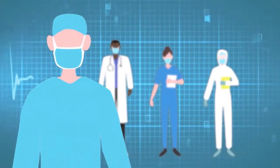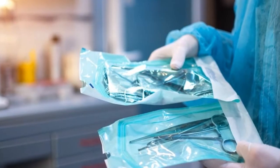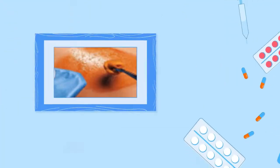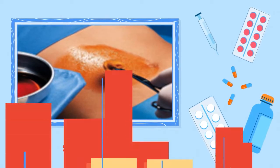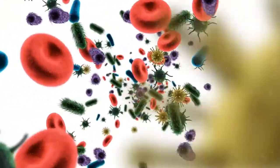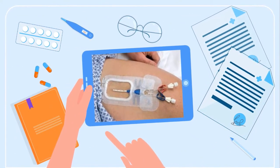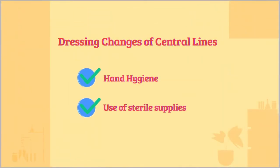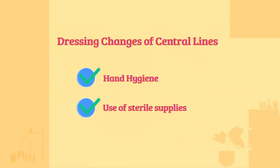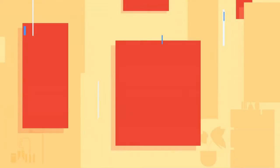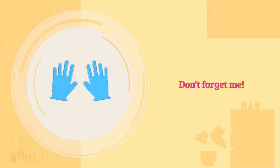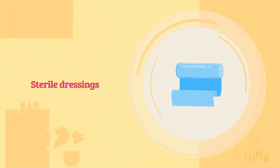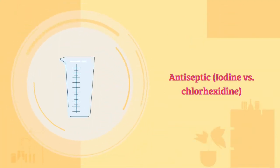Sterile gloves, gowns, and drapes act as barriers to prevent the transfer of microorganisms. All equipment and supplies must be sterile — sterile packaging and proper handling are essential. The insertion site should be thoroughly cleaned with an antiseptic solution to eliminate potential pathogens on the skin. The dressing covering the central line insertion site should be changed regularly, typically every seven days. During dressing changes, sterile technique must be used, including meticulous hand hygiene, sterile gloves, and sterile dressings and solutions.